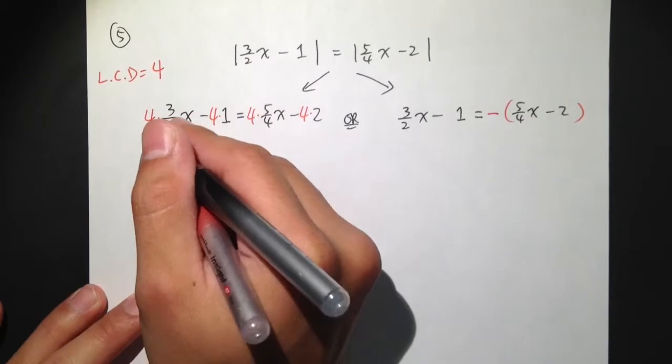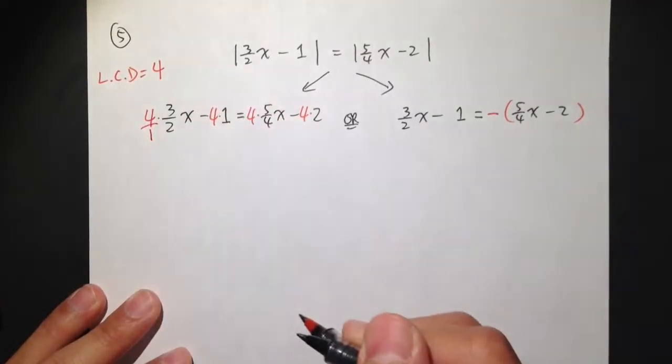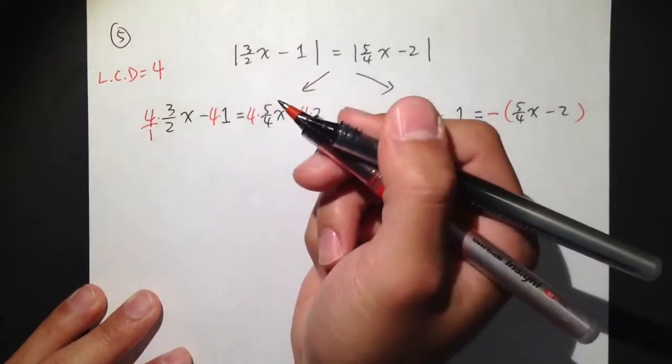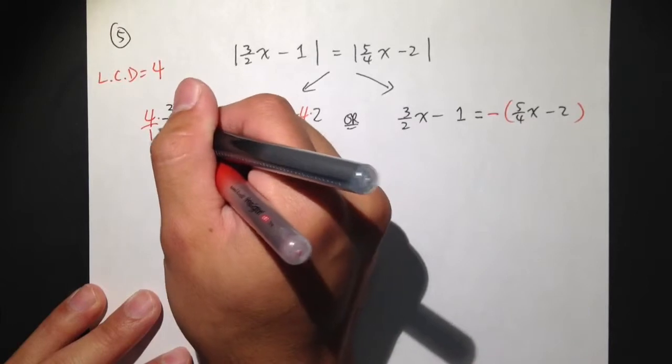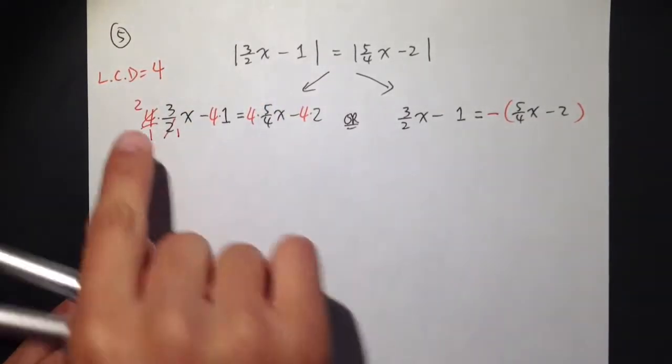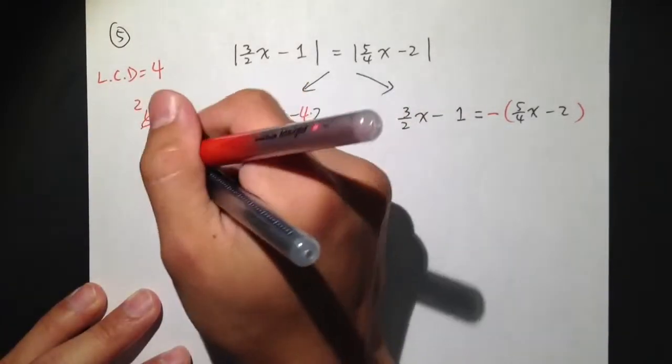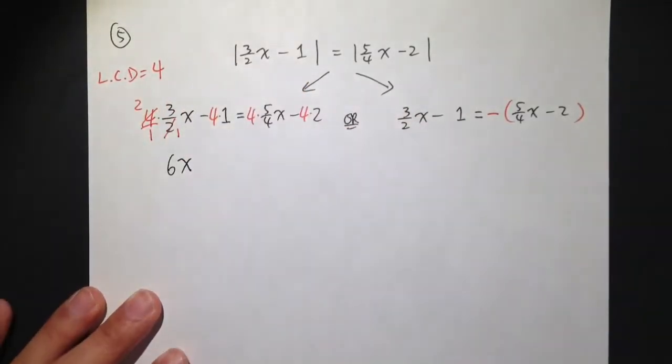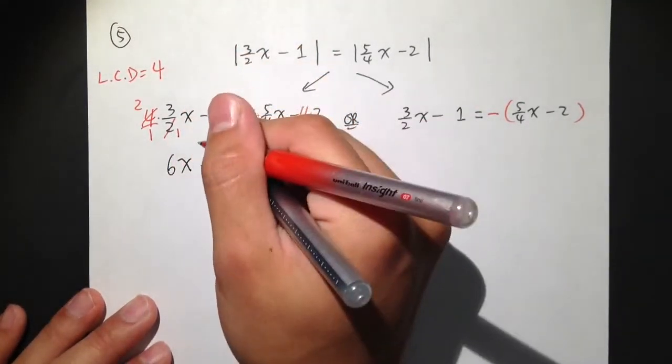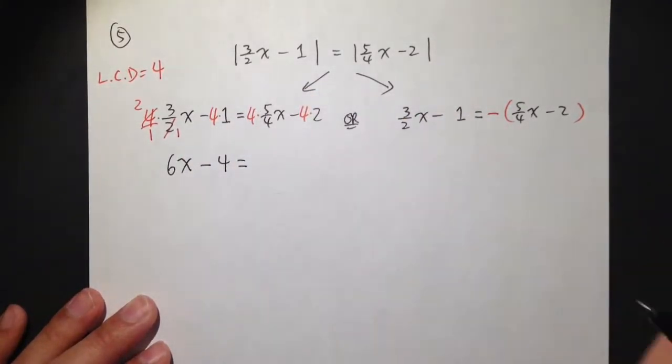I have 4 times 3 over 2. So, let's put a 4 as 4 over 1. Then, we can cross-cancel first before we actually multiply. 2 goes into 2 once, 2 goes into that 4 twice. So, we just need to do 2 times 3, and that's 6. So, 6x. Then, minus 4 times 1, which is just 4.